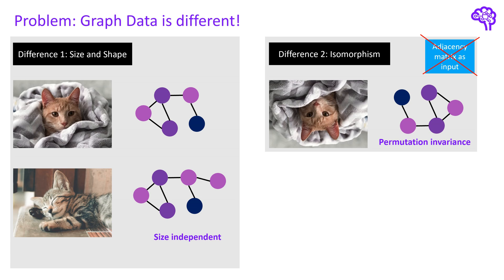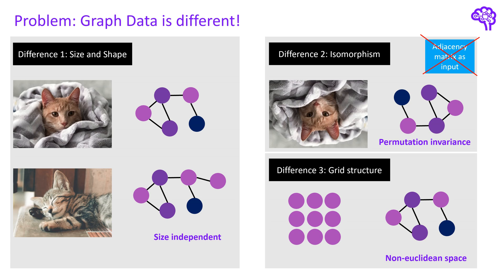Finally, the structure of graphs is non-Euclidean. For images you have a clear grid that can be expressed by x and y coordinates. Graphs are dynamic structures that may be laid out differently in space, and distance metrics such as the Euclidean distance are not clearly defined — for instance you cannot really say how close node A and node B are. Of course you can add 3D coordinates, but they do not incorporate the edge information between nodes. This is also the reason why the machine learning area around graphs is called geometric deep learning.